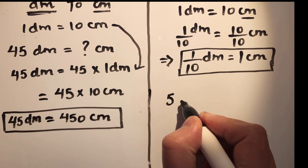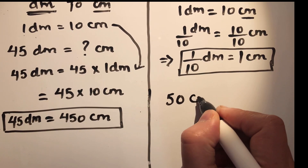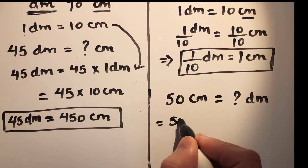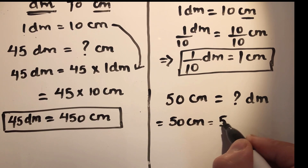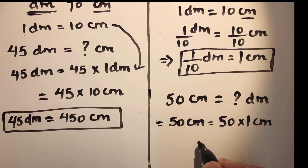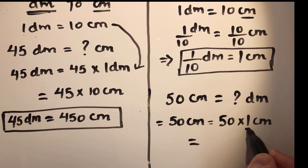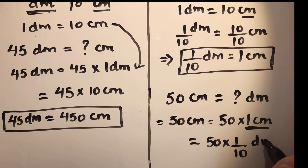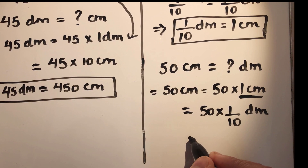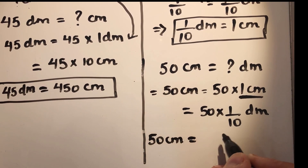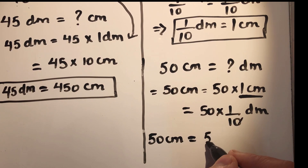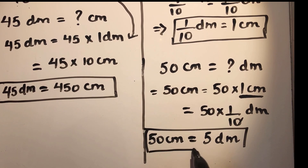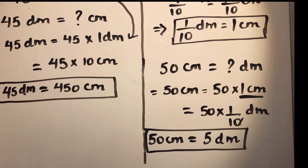Suppose we need to convert 50 centimeters to how many decimeters. We can write 50 centimeters as 50 times 1 centimeter. From the relation, we write 1 centimeter as 1 over 10 decimeters. So here 50 times 1/10 gives us 5 decimeters. So 50 centimeters is equal to 5 decimeters.